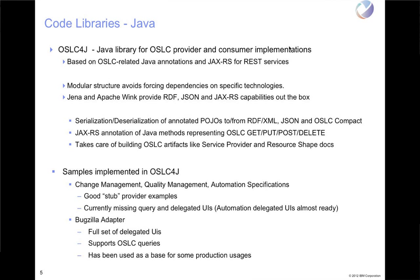The other thing OSLC4J helps with, using JAXRS, is being able to write services that can respond to HTTP requests — things like GETs, PUTs, POSTs, and DELETEs — without having to write low-level HTTP code yourself. Out of the box, OSLC4J uses Apache Wink as its JAXRS provider. We are looking at potentially other JAXRS providers such as Apache CXF or the Oracle/Sun Jersey implementation of JAXRS as optional additional plug-ins, but today Apache Wink is our JAXRS provider.